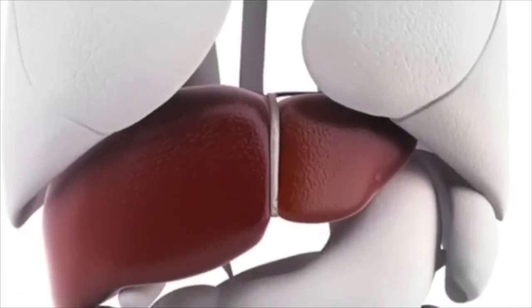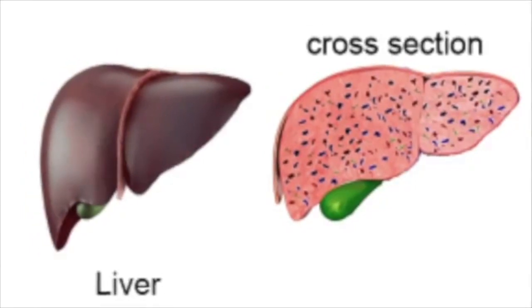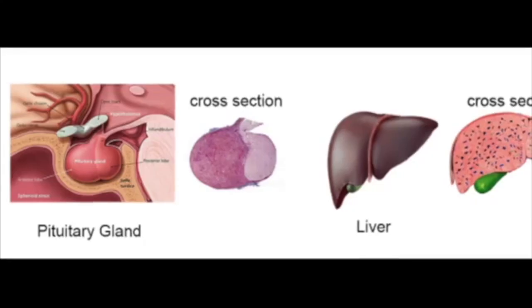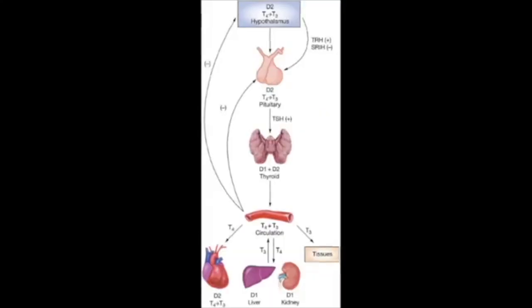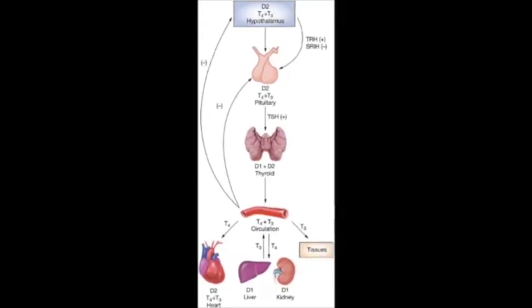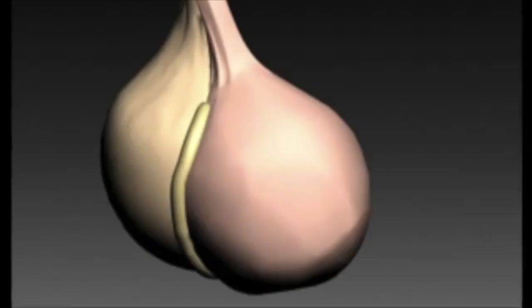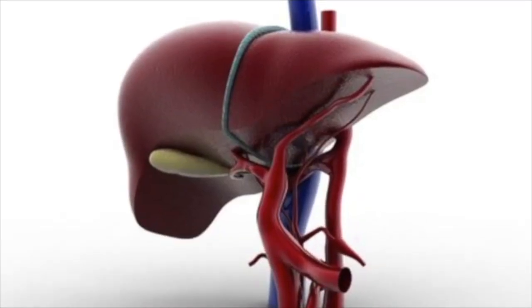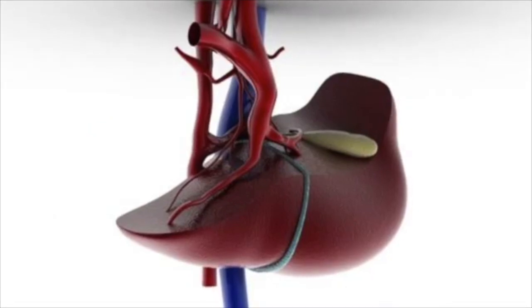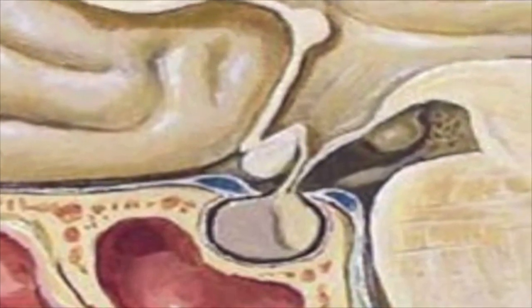Right below the lungs we have the liver. The counterpart of the liver is not too hard to identify, and I believe it is the pituitary gland. The physical resemblance between these two structures is remarkable, and they both serve endocrine functions and work as a team. It has been found that malfunction of the pituitary gland can lead to diseases like non-alcoholic fatty liver. The gallbladder is a structure below the liver, and because of position and physical resemblance, I believe the counterpart of the gallbladder is no other than the optic chiasma.